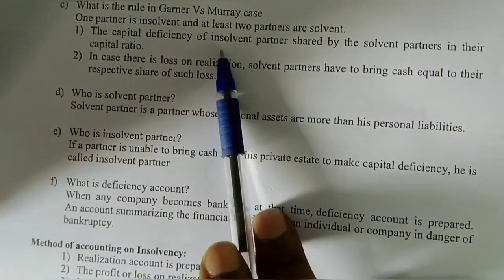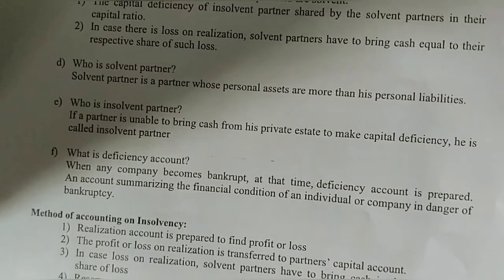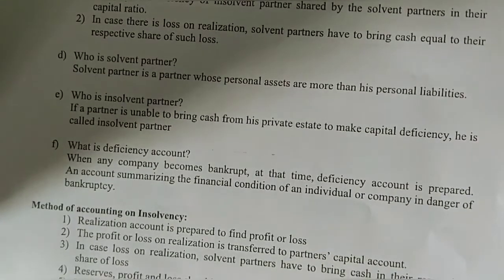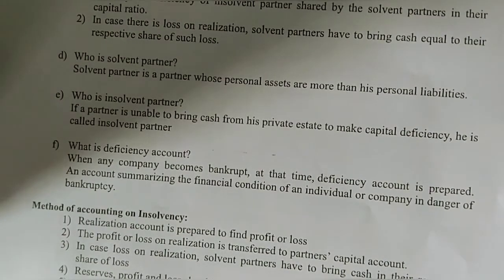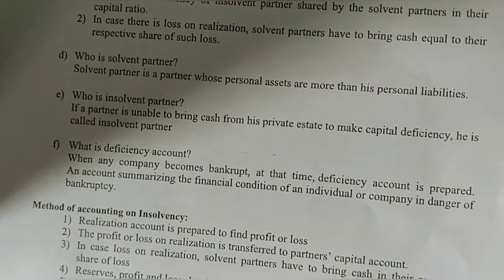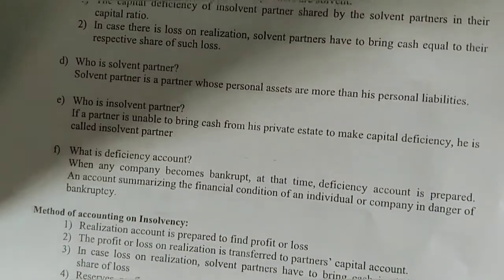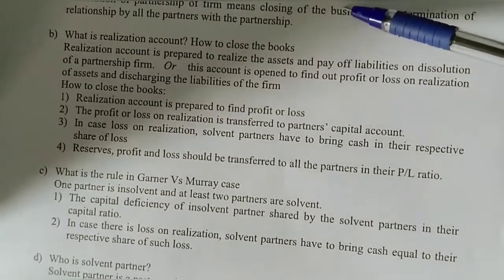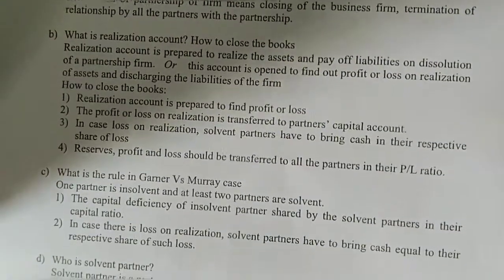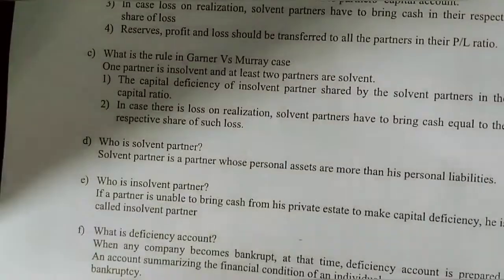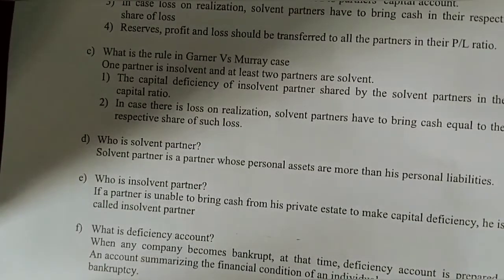Under the Garner versus Morrare rule, reserves and profit and loss balances are transferred to all partners in their profit and loss ratio. The net capital deficiency of an insolvent partner is found first, then that deficit is shared by the solvent partners who bring in cash. Finally, a settlement is made between all solvent partners. These are common questions likely to appear in two-mark short answer sections. The practical problems related to insolvency of partnership firms will be covered in the upcoming class.